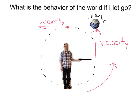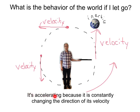What if I let go right here? You could see that the world would keep going straight downward — its velocity is down and its inertia would keep it going in that downward direction. So if we look at our world constantly going in circular motion, you can see the velocity of the world is constantly changing direction as it goes around the circle. Thus the velocity is changing because the direction is changing, and so it is accelerating.